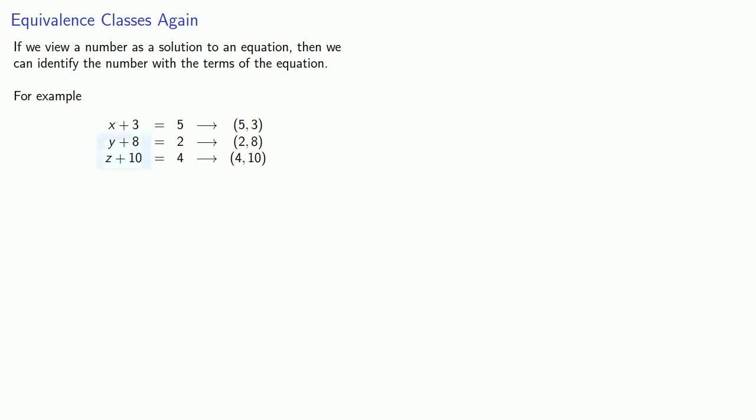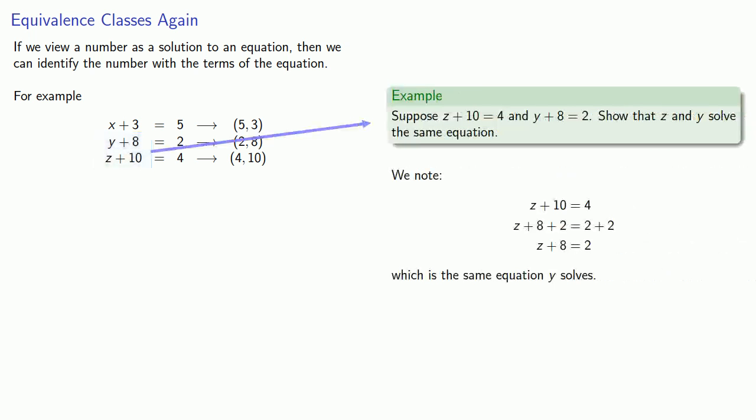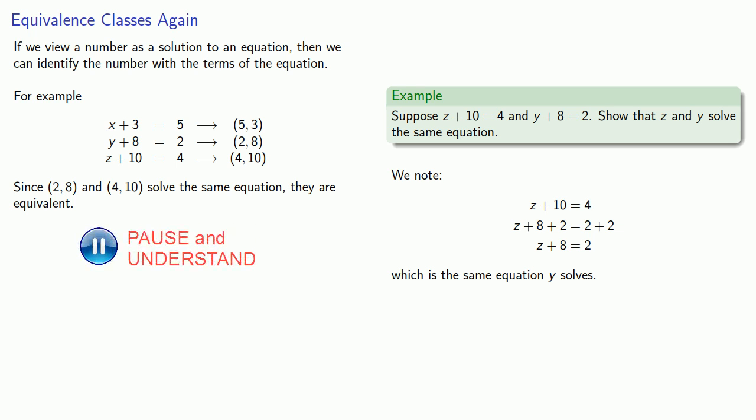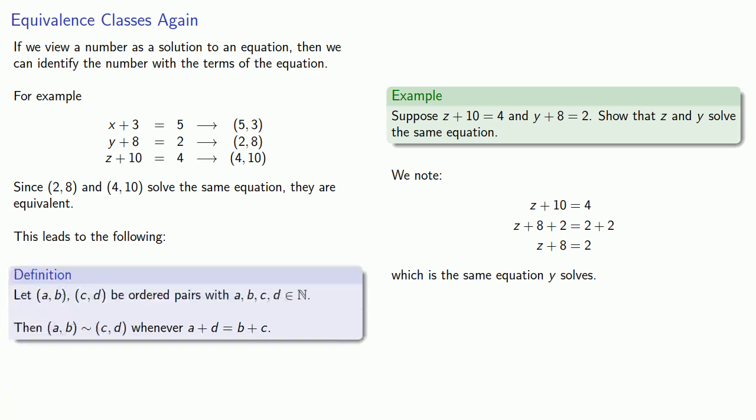Now, we noted that 2, 8 and 4, 10 solve the same equation. That means they are equivalent. And that means that we'd like to have some way that we can identify when ordered pairs are equivalent. So after some thought, and we'll see why this works, this leads to the following.